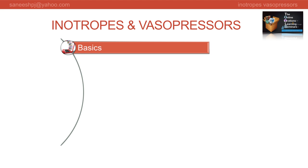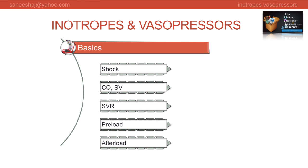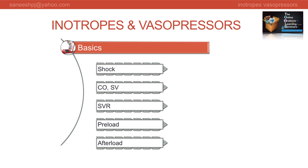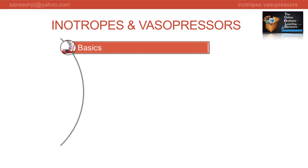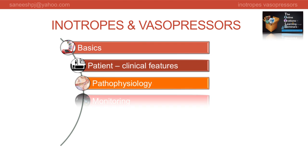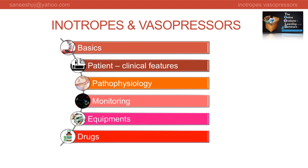Before we envisage starting an inotrope or a vasopressor, we should be clear about some basic terminologies like shock, cardiac output, heart rate, systemic vascular resistance, preload, afterload, etc. We should know about our patient - the clinical features, pathophysiology, monitoring requirements, and familiarity with equipment and drugs.